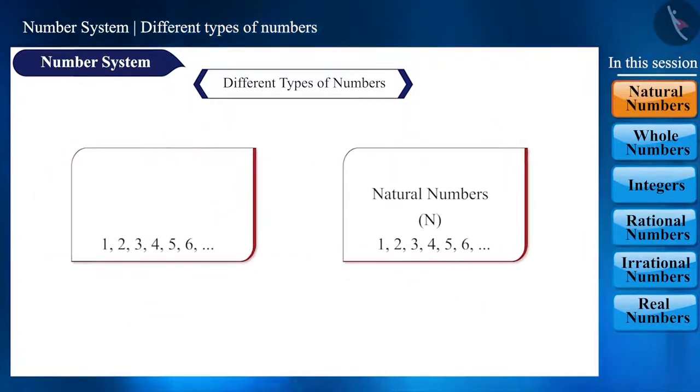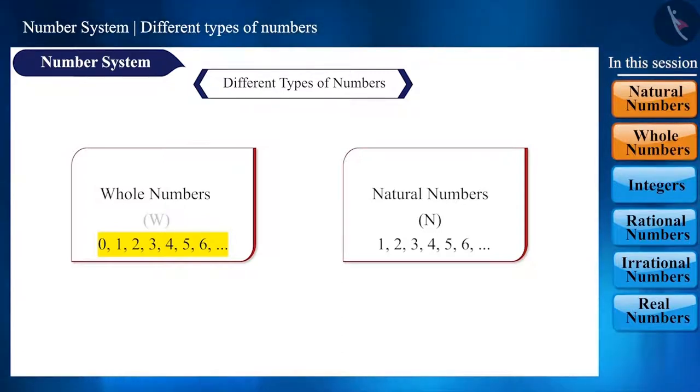Now, if we add the number 0, this series will be called whole numbers, which are 0, 1, 2, 3, 4, 5, 6, etc. These are indicated by the symbol W.